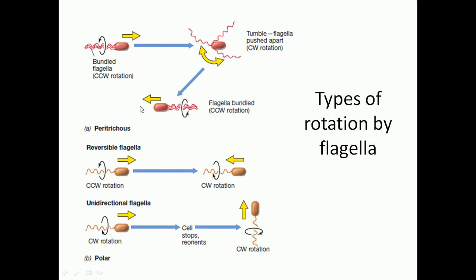The movement by peritrichous flagella is different from polar flagella. Peritrichous flagella can produce both bundle movement and tumbling movement. In bundle movement, all of the flagella work together like a bundle, rotating in the same direction — either clockwise or counter-clockwise. Generally they rotate in the counter-clockwise direction as a single unit, allowing the bacteria to move from one side to another.